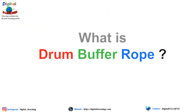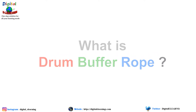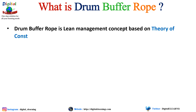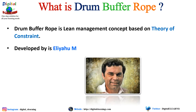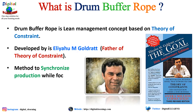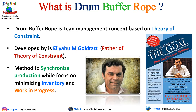Drum Buffer Rope is a lean management concept based on the Theory of Constraints. It was developed by Eliyahu M. Goldratt, also known as the father of the Theory of Constraints, in his book 'The Goal.' It is a method to synchronize production while minimizing inventory and work in progress.